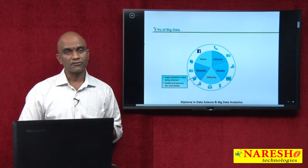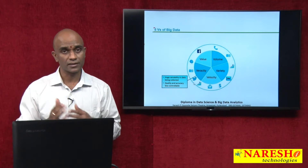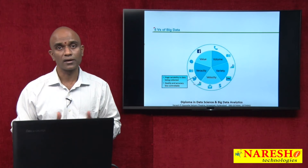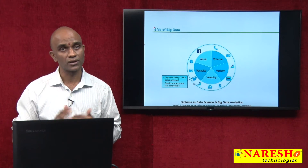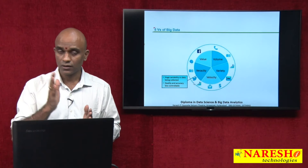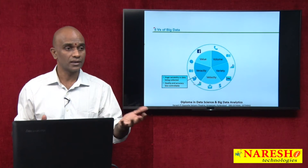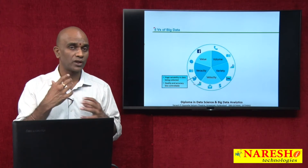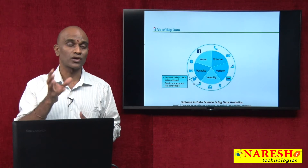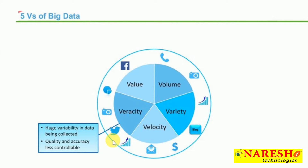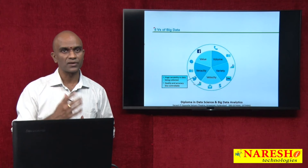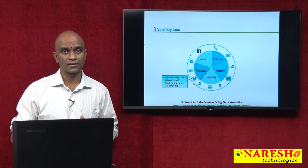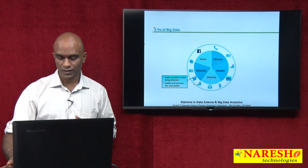Then comes veracity — the truthfulness of the data. For example, Honda and Toyota both writing tweets: Honda guys may start tweeting that Toyota is not good. They are not being truthful. So we have to know what is truthful and what is not, what is trustworthy and what is not. The quality and accuracy — if it is less truthful and less accurate — also refers to the veracity of the data.